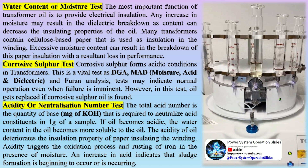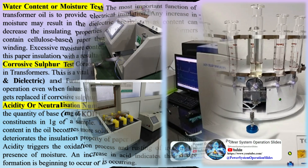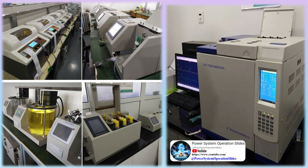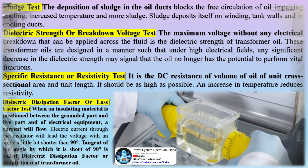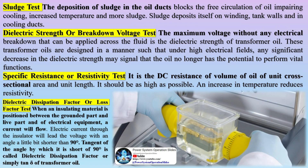Sludge test: the deposition of sludge in oil ducts blocks the free circulation of oil, impairing cooling, increasing temperature, and generating more sludge. Sludge deposits itself on windings, tank walls, and in cooling ducts.